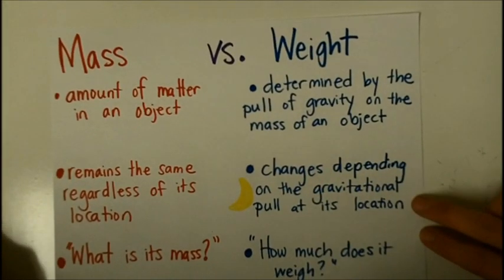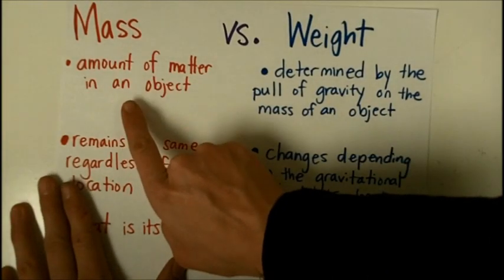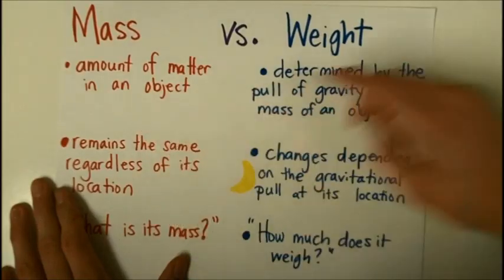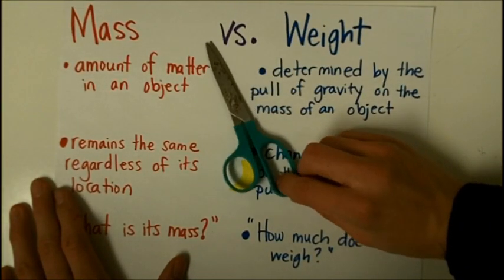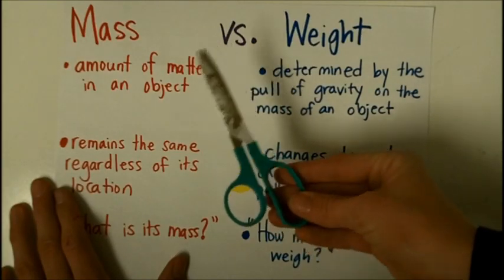Mass and weight, many people think that they are the same thing, but they are in fact not. Mass is the amount of matter in an object. In other words, if we look at these scissors and we wanted to measure its mass, I would tell how much is here, how much stuff is here.